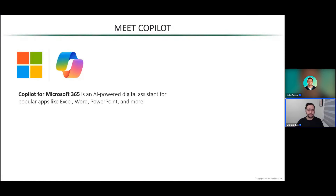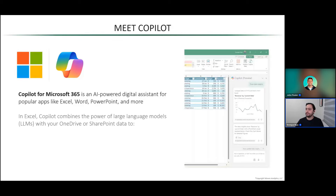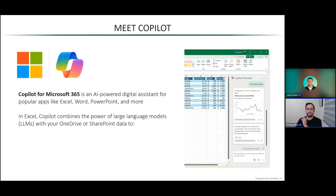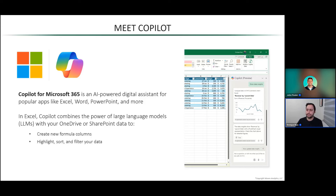Copilot for Microsoft 365 is an AI-powered digital assistant for popular apps like Excel, Word, PowerPoint, and more. In Excel in particular, Copilot combines the power of LLMs with your OneDrive or SharePoint data. It does require internet usage and requires you to save your Excel worksheet to either OneDrive or SharePoint. If you do that, it allows you to create new formula columns, highlight, sort, and filter your data, and even analyze that data and show you some insights.